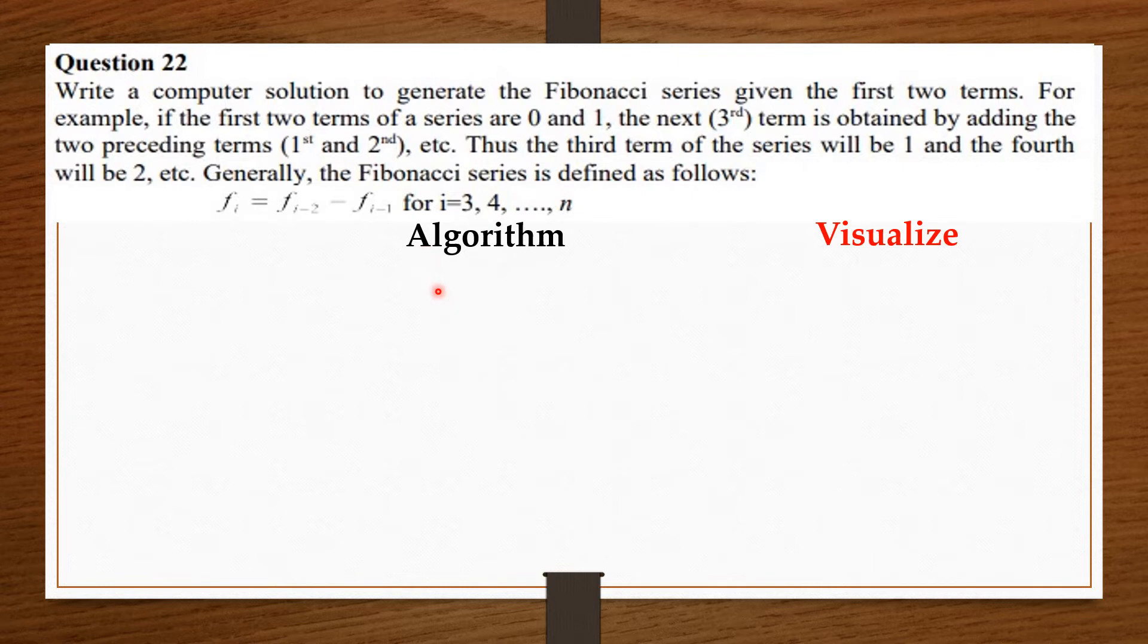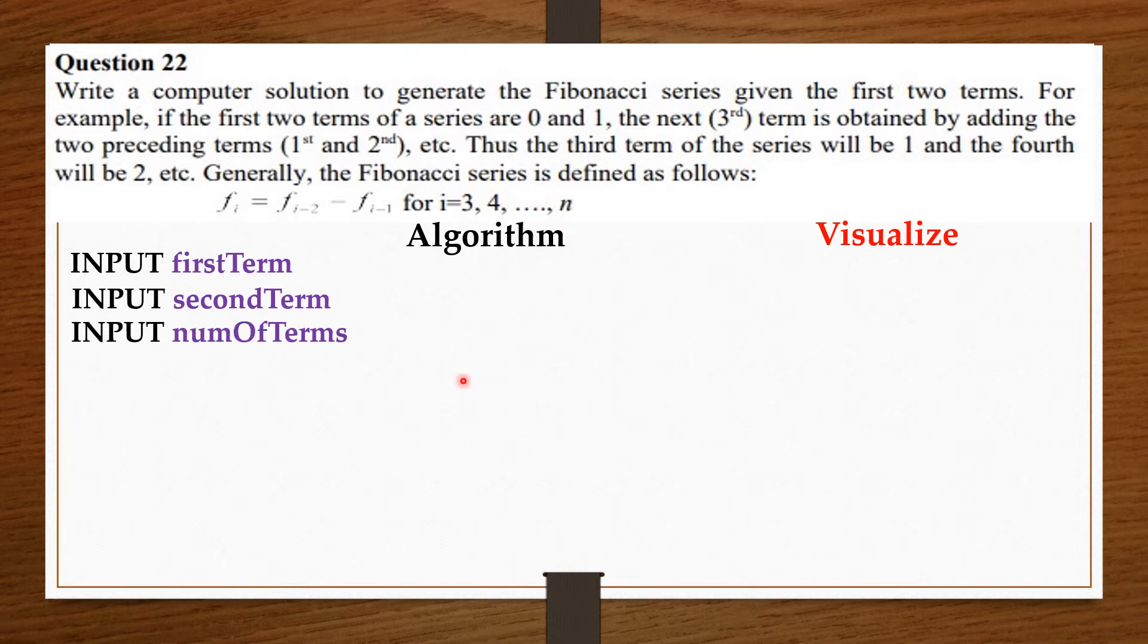To the algorithm, we are going to ask the user to enter the first two terms. Again, we are going to ask the user to enter the number of terms of the Fibonacci sequence he or she will want to generate. Now, with our first and second terms, we can go ahead and generate the next term in the sequence, which is the first term plus the second term. To display the sequence we just generated, we are going to print them all out.